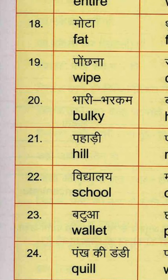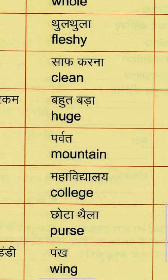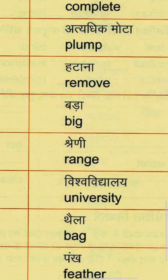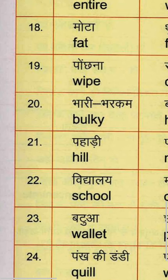Eighteenth group: Mota means Fat — F-A-T. Thul-thula means Fleshy — F-L-E-S-H-Y. And Atyadhik mota means Plump — P-L-U-M-P.